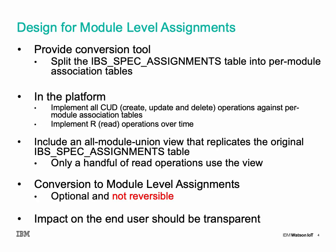How does the design for this new module level assignment structure look? The first goal was to provide a conversion tool to split the big IBS Spec Assignments table into smaller per-module association tables. We had to implement the capability to handle all create, update, and delete operations against that per-module structure. We tackled almost all read operations as well, with a few remaining to address over time. In the meantime, an all-module union view replicates the original IBS Spec Assignments table to handle outstanding read operations still reliant on the old structure.